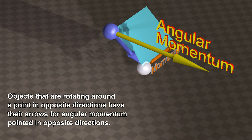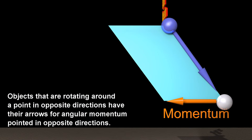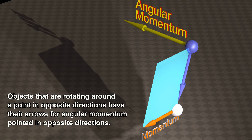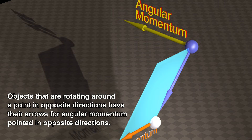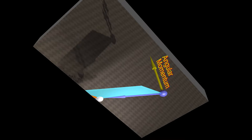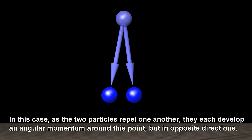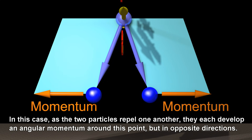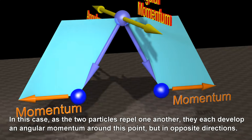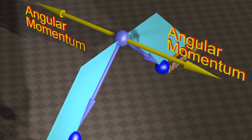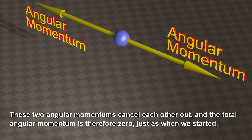Objects that are rotating around a point in opposite directions have their arrows for angular momentum pointed in opposite directions. In this case, as the two particles repel one another, they each develop an angular momentum around this point, but in opposite directions. These two angular momentums cancel each other out, and the total angular momentum is therefore zero, just as when we started.